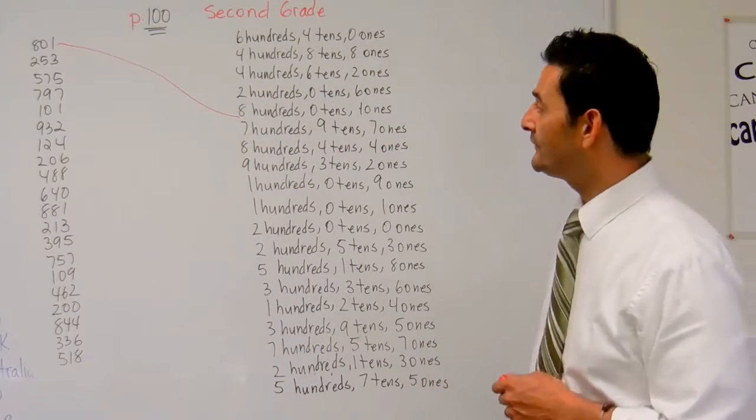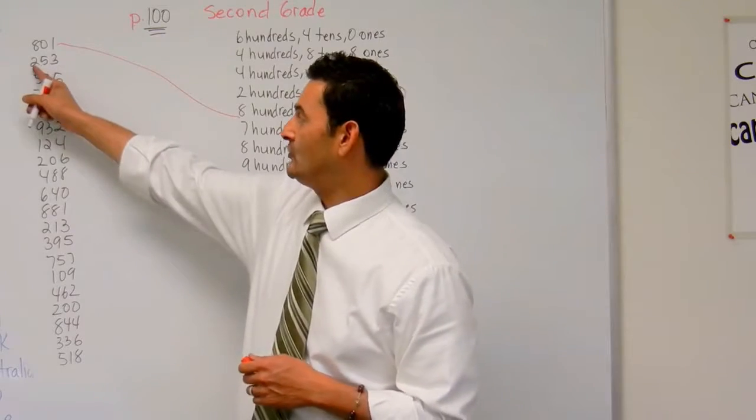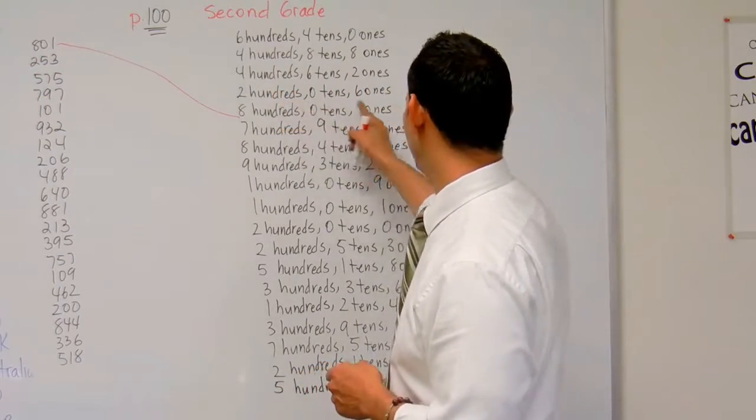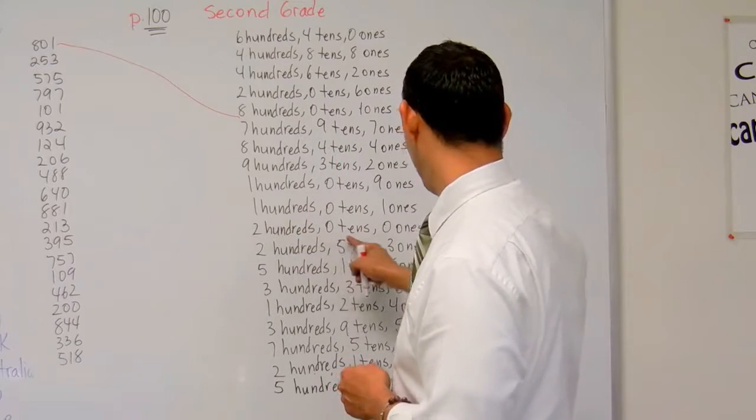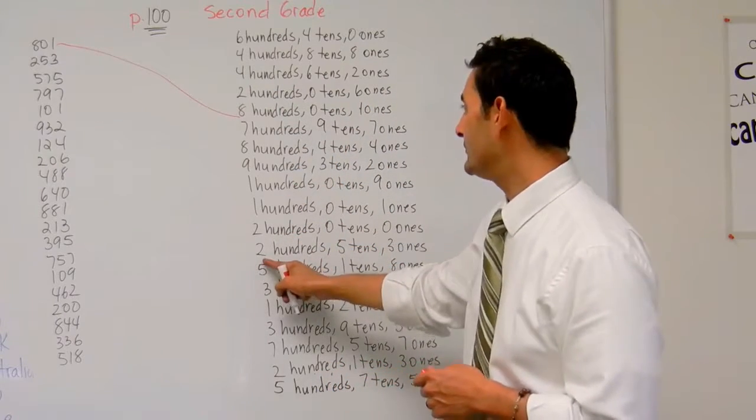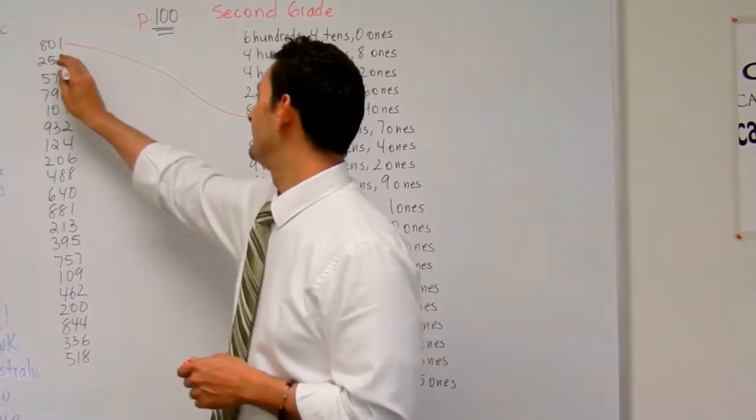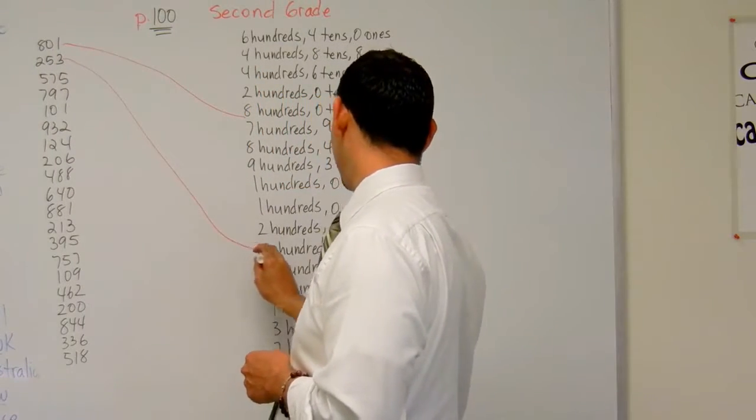The next one is 253. I've got 200s, five tens, and three ones. 200s. Oh, that's not it. 200s. Oh, that's not it. 200s. Oh, that's not it. 200s. Five tens, and three ones. Yep, that's it. I'm going to go ahead and connect that there.